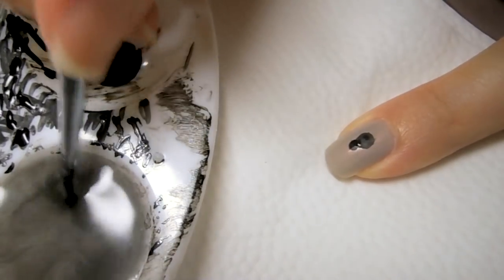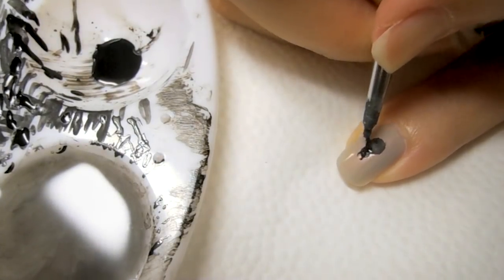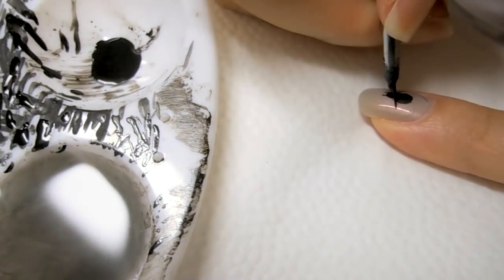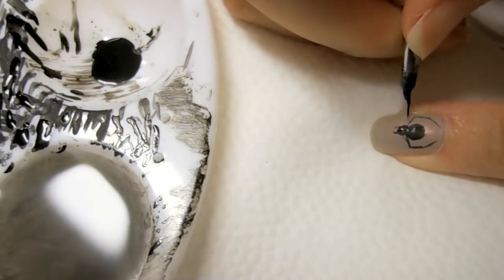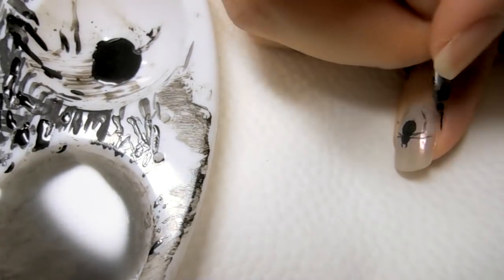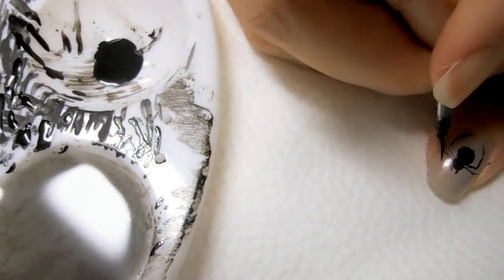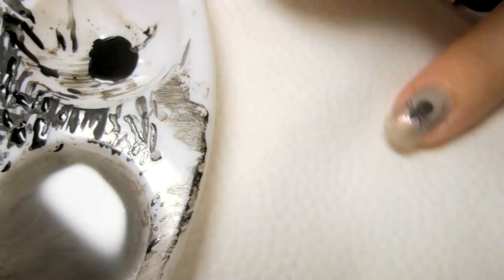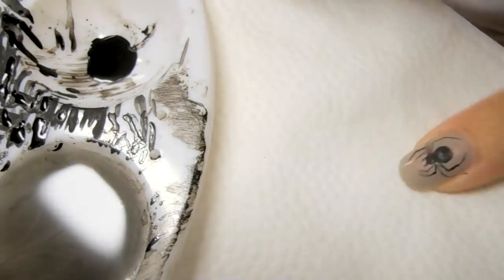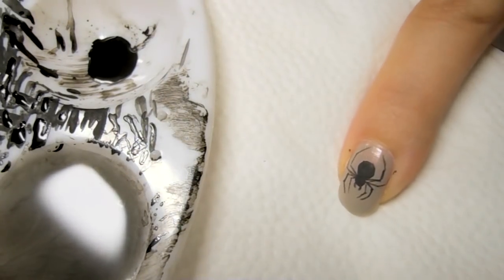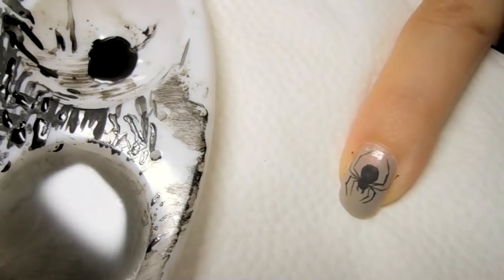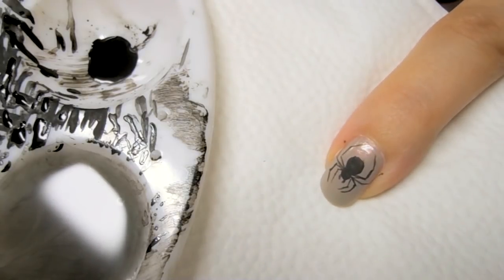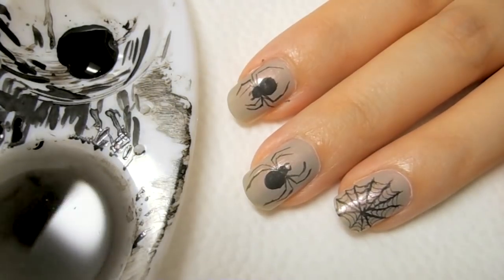I'm going to give him two fangs. And there is the spider. We're going to wait until this is completely dry and come back to add more details. So now we're going to go into the white paint.